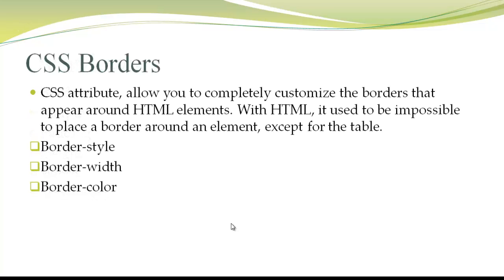Coming to CSS Border Properties, CSS attributes allow you to completely customize the borders that appear around an HTML element. In HTML, we use borders only for tables. CSS borders let you create crisp, customized border styles with very little work. These are the border properties: Border Style, Border Width, and Border Color. We will see them one by one.